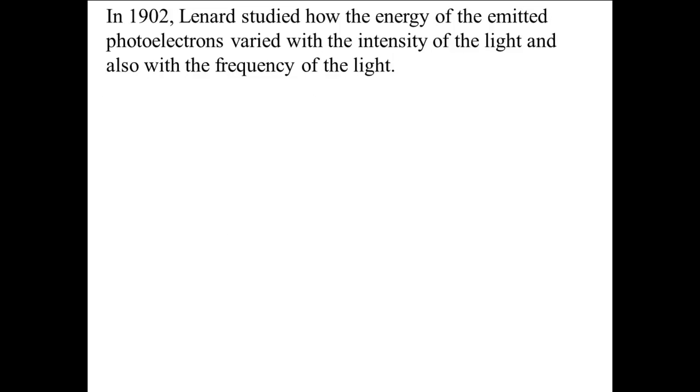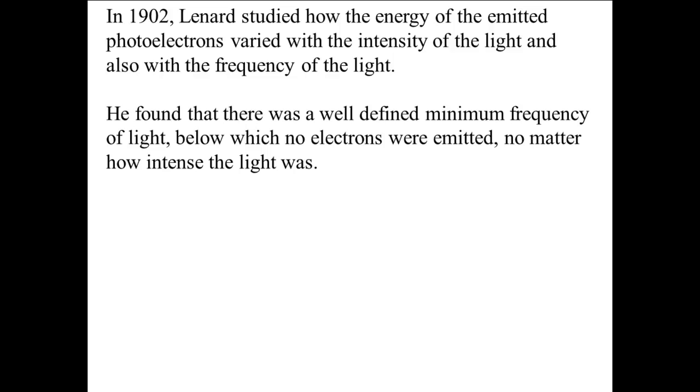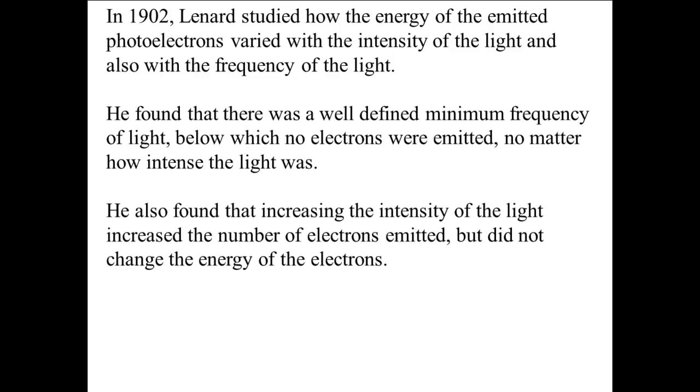In 1902, Lenard studied how the energy of the emitted photoelectrons varied with the intensity of the light and also with the frequency of the light. He found that there was a well-defined minimum frequency of light, below which no electrons were emitted, no matter how intense the light was. He also found that increasing the intensity of the light increased the number of electrons emitted, but did not change the energy of the electrons. This did not agree with the understanding of the energy of light at that time.